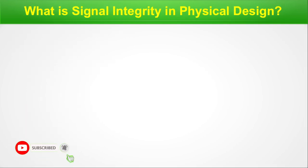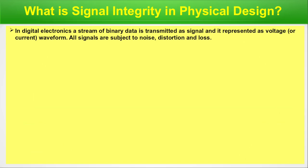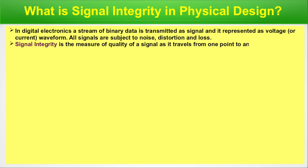What is Signal Integrity in Physical Design? In digital electronics, a stream of binary data is transmitted as a signal and represented as a voltage or current waveform. All signals are subject to noise, distortion, and loss. Signal Integrity is the measure of quality of a signal as it travels from one point to another point.